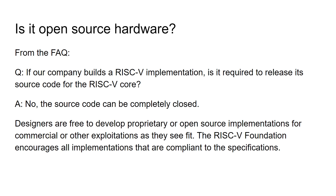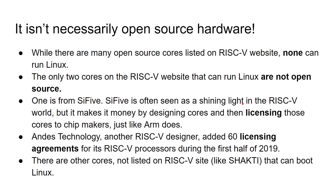So let's get this straight: if you see a RISC-V processor anywhere, in a board or in a development situation, that doesn't necessarily mean it is an open source hardware solution. And to nail that point home: while there are many open source cores listed on the RISC-V website, none of them can run Linux. The only two cores on the RISC-V website that can run Linux are not open source. One of them is from SiFive. SiFive is kind of seen as the shining light in the RISC-V world, but it makes its money by designing cores and then licensing them for money to chip makers, in the same way that companies like ARM and others do at the moment. So the business practices of SiFive are exactly the same as other chip designers and chip IP — intellectual property — designers that we see today.